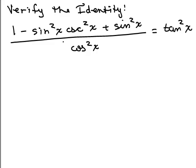And I notice I have a sine squared times a cosecant squared. You know, usually I put things in terms of sine and cosine. Cosecant of x is, you know, 1 over sine of x. So cosecant squared x is 1 over sine squared x. These are reciprocals. When you multiply reciprocals, you get 1.